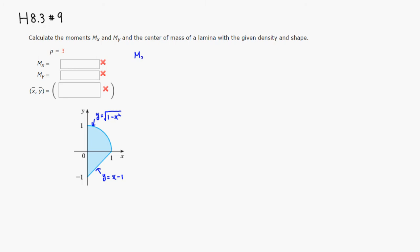So M sub X is going to equal rho, which is 3, times one half — that's part of the formula — then integrate from 0 to 1. We square the top function: the square root is gone, so we have 1 minus x squared, minus the bottom squared, which is x minus 1 squared, expanded as x squared minus 2x plus 1. Then integrate with respect to X.